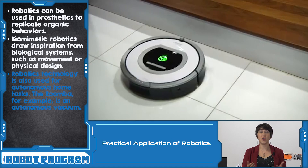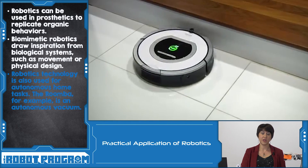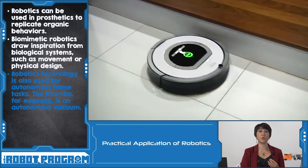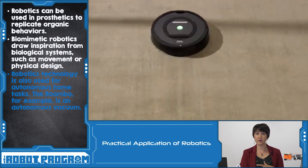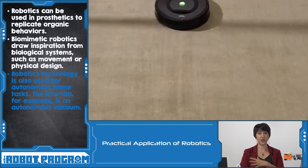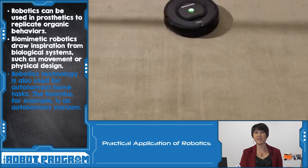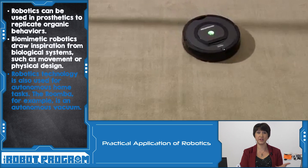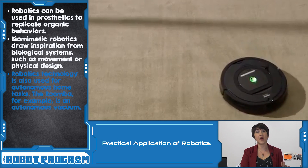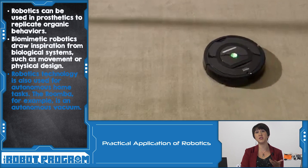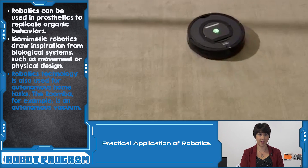Robots can even be found in homes now. Look at something like the Roomba vacuum — it's an autonomous vehicle that can go around and clean your carpet or floor for you. It's an example of how a robot is being used in modern day life.